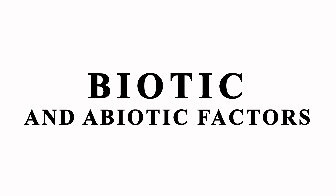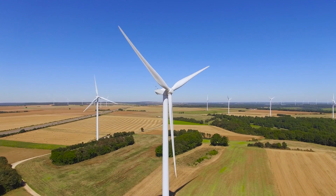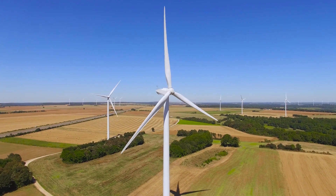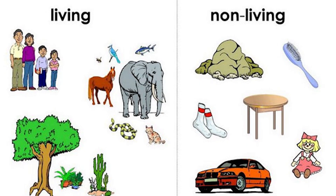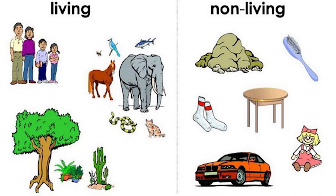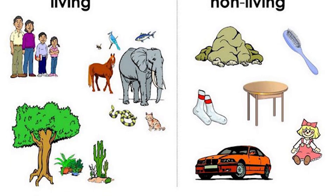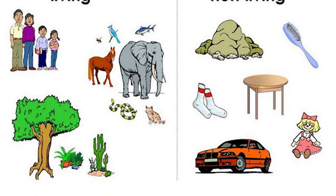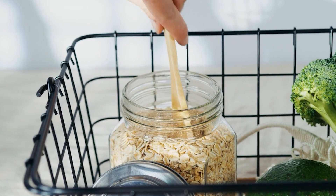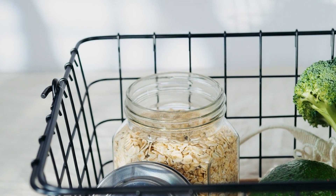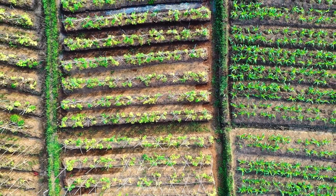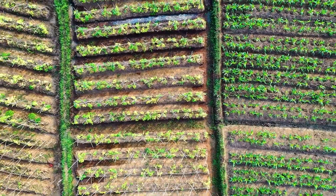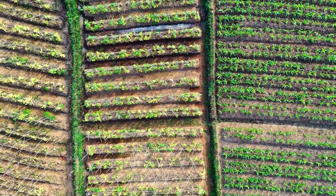Biotic and Abiotic Factors. The main goal of ecology is to figure out how living and non-living things are spread out in the environment. The living and non-living things and their interaction with the environment make up the biotic and abiotic factors.